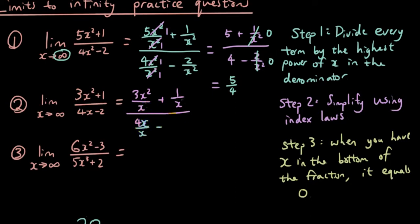So I'm dividing everything by x, and then I'm using index laws to simplify, so then I have 3x² over x, so that's 3x, 4x over x, so that's 4. So the answer is 3x plus 1 over x over 4 minus 2 over x. So 1 over x is 0, 2 over x is 0, 3 times x over 4 is the answer.